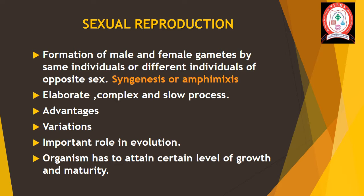What is sexual reproduction? The mode of reproduction which involves the formation of male and female gametes, either by the same individual or by different individuals of opposite sex, is known as sexual reproduction. It is otherwise called syngenesis or amphimixis.